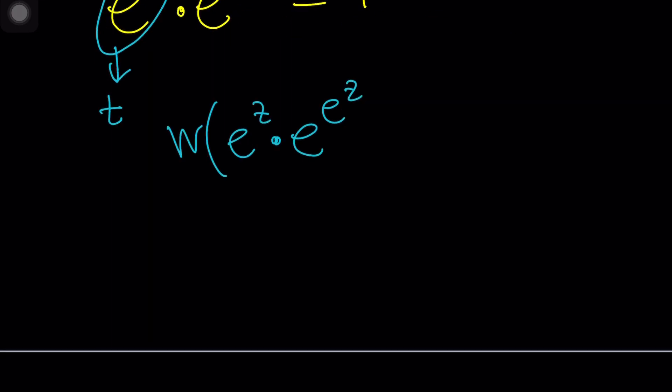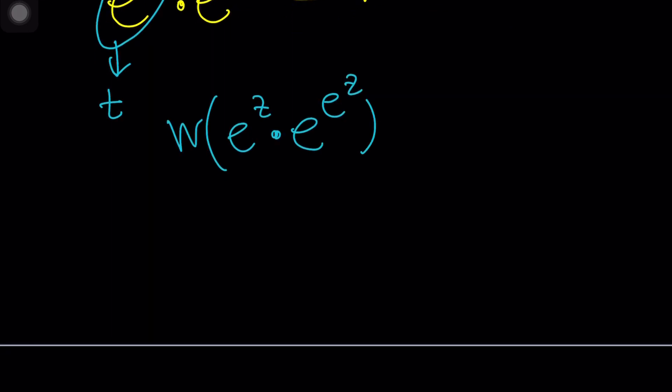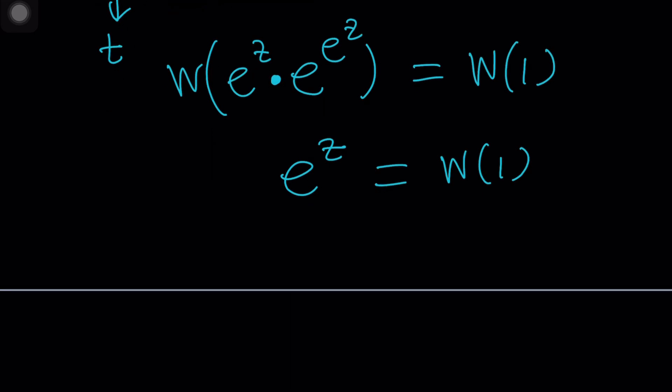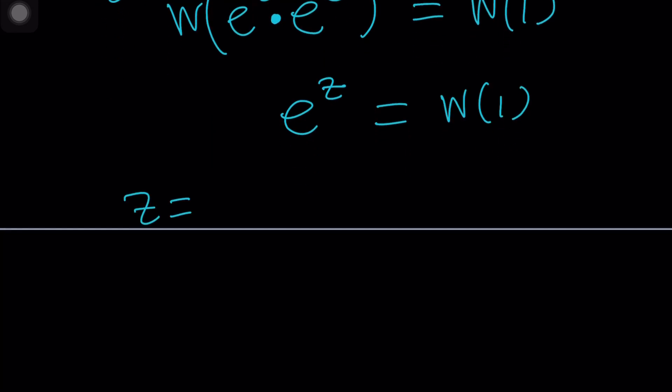Now, we have this on the left hand side and on the right hand side, we have W of 1. Now, we can go ahead and apply W on the left hand side. That gives us E to the power Z equals W of 1. And then from here, we can ln both sides. Z should be LN W of 1.